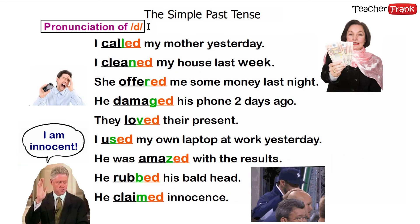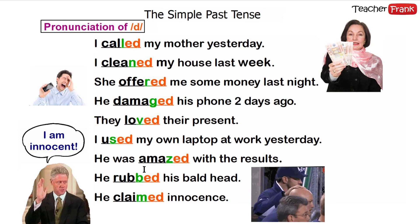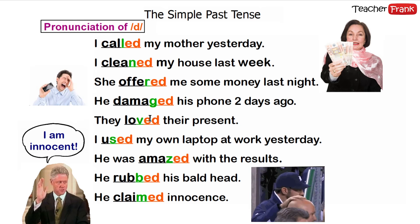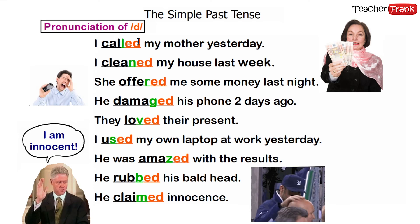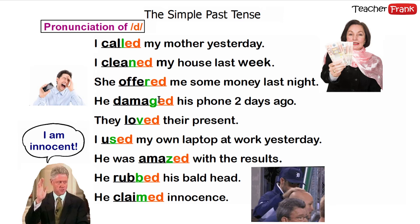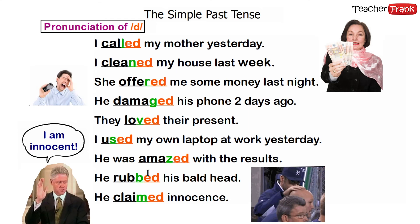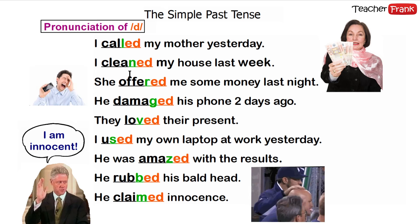Now the D pronunciation. When the word ends with the letter L, N, R, G, V, S, Z, B, or M — or a vowel sound (A, E, I, O, U) — the pronunciation is D. Examples: "I called" — D sound. "I cleaned my house last week." "She offered." "He damaged." "They loved." "I used." "He was amazed." "He rubbed his bald head." "He claimed." So pay attention to that D sound: called, cleaned, offered, damaged, loved, used, amazed, rubbed, claimed.